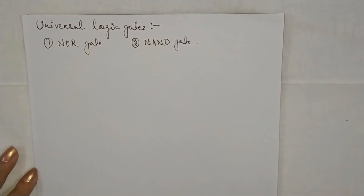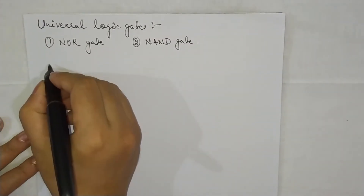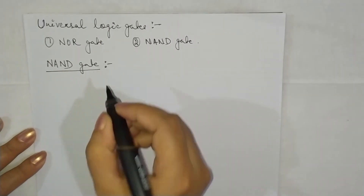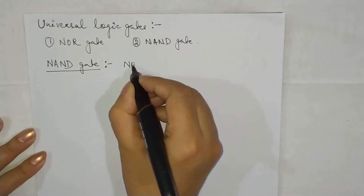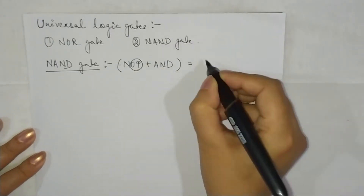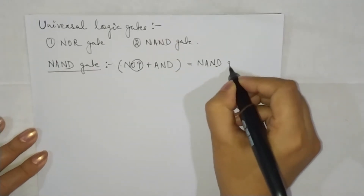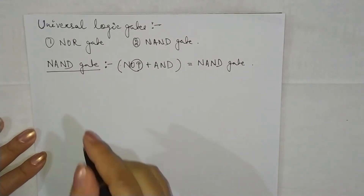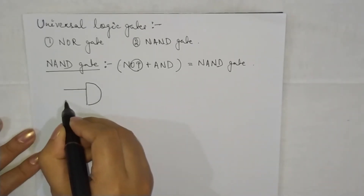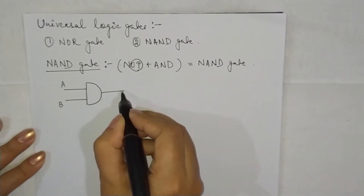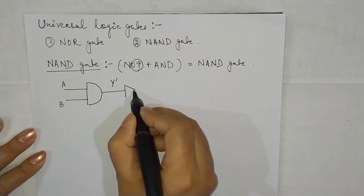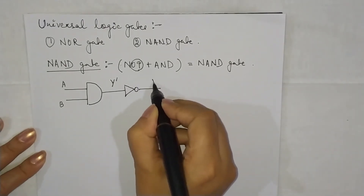Let's start today's discussion on the NAND gate. As the name suggests, this is a combination of two gates — NOT plus AND. You can see here the two letters N and OT, where OT is silent, and you get NAND gate. If you go to the circuit symbol, the AND gate circuit symbol is a two-terminal device with two inputs A and B, and one output. Let us take the intermediate output to be Y prime, and at this end you connect the NOT gate. The final output equals Y.